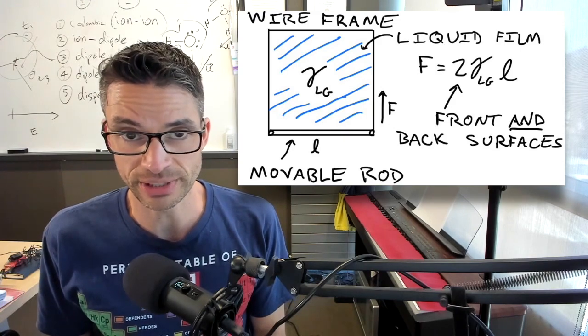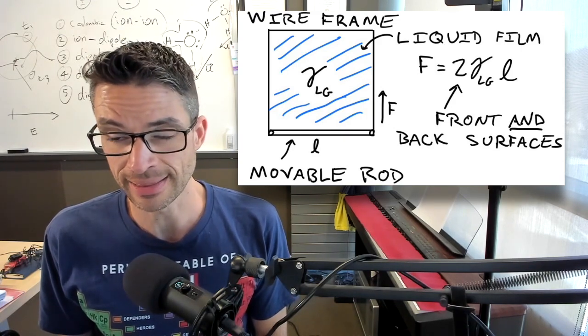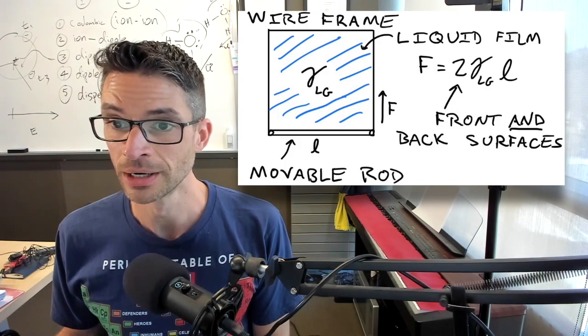The units of surface tension are force per unit length, where length is the length of the movable rod.